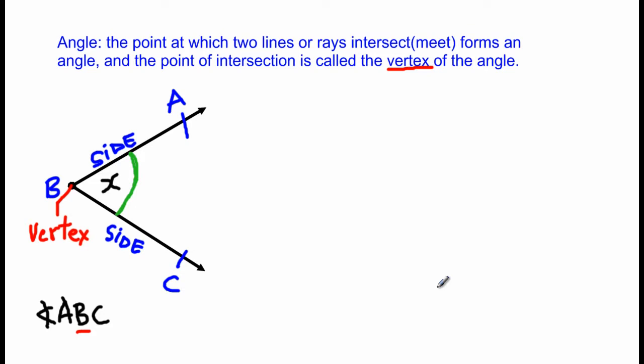Also another way of writing this angle - we could say this angle is the same as, if I'm referring to the angle at B, I could also say angle CBA.